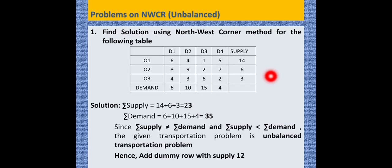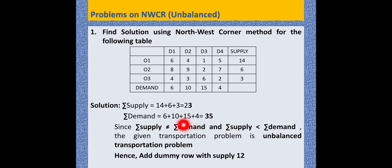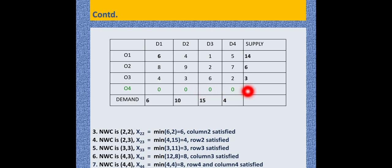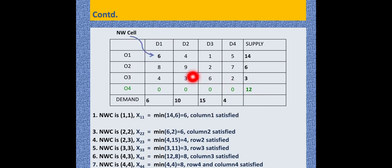Now let us solve the next problem on NWCR, which is an unbalanced problem. The summation of supply is 23 and summation of demand is 35. Since supply is not equal to demand and supply is less than demand, it is an unbalanced transportation problem. Hence, we add a dummy row with supply 12 to balance it, and then follow the same NWCR allocation procedure.